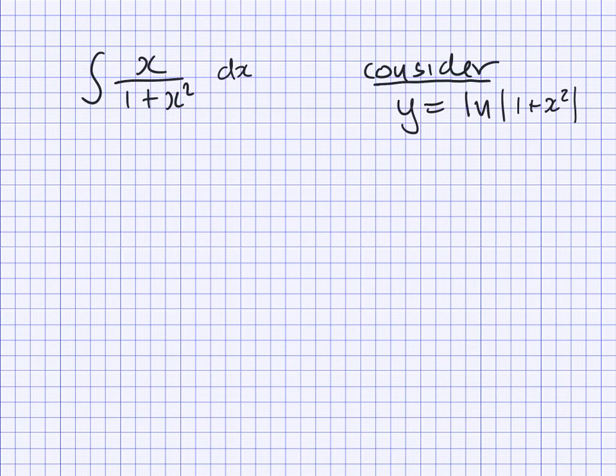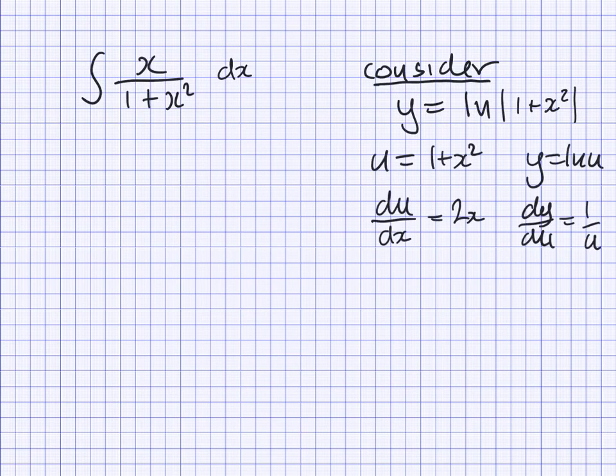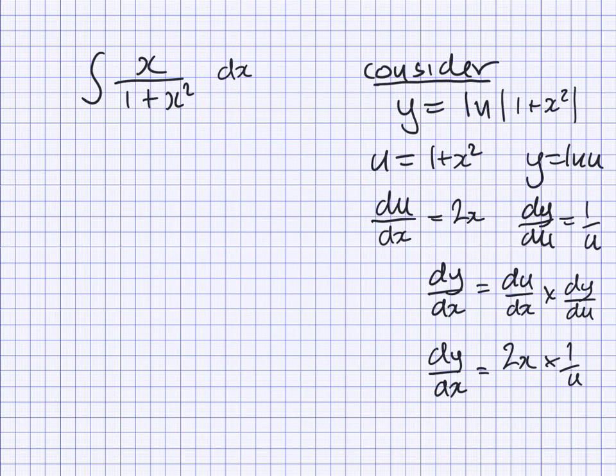So I've considered ln of 1 plus x squared. If we differentiate this, we'll need to use the chain rule. Let u equal 1 plus x squared, so if we differentiate, we get du dx equals 2x. Doing the substitution, y equals ln u, which if you differentiate gives you dy du is 1 over u. Now we're going to smash them together using the chain rule, which gives us dy by dx equals 2x times 1 over u, which simplifies to 2x over 1 plus x squared, which is very close to the original thing we wanted.